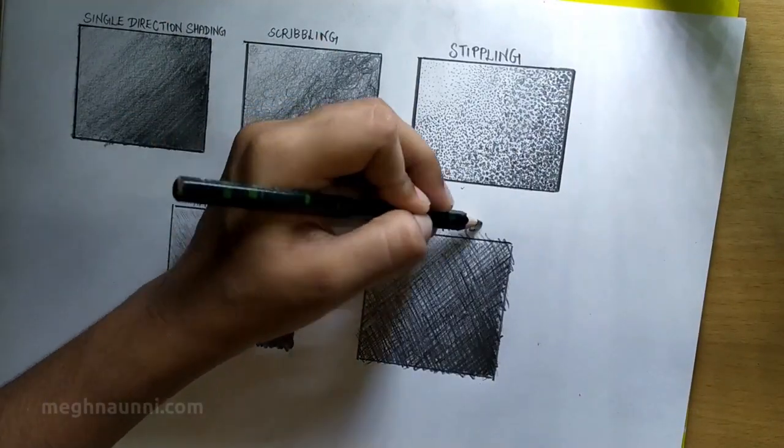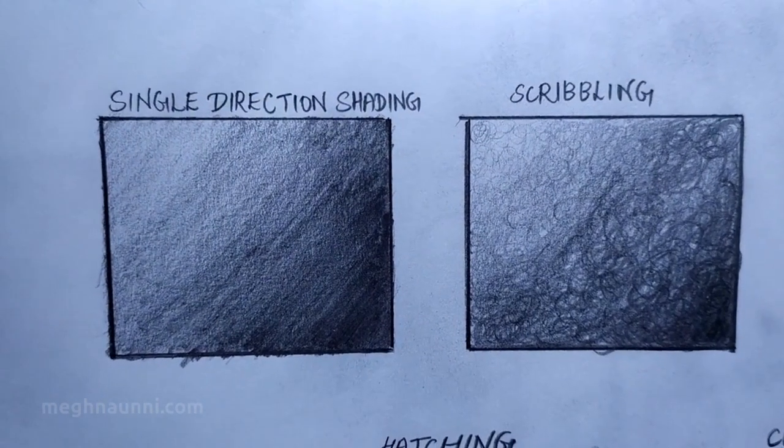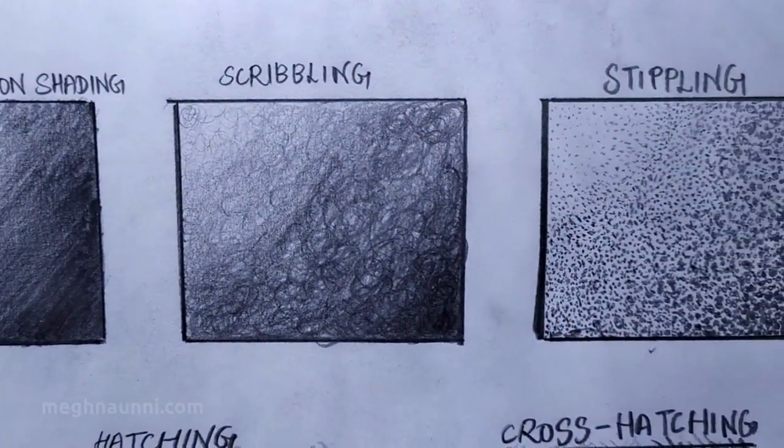So these are the five methods. Single direction, scribbling, stippling, hatching and cross hatching.